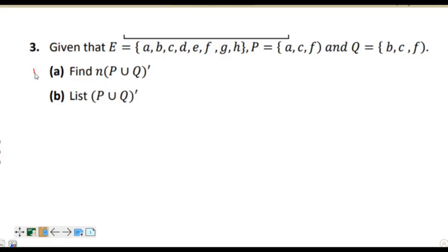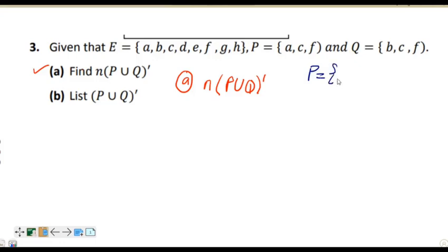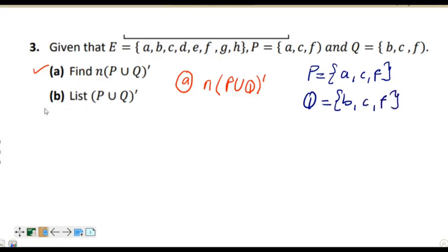We go to question A: find the number of elements in (P union Q) complement. So first, we are going to answer question A, where we need to find the number of elements in (P union Q) complement. We have set P with elements A, C, and F, and set Q with elements B, C, and F. Since we have P union Q in brackets and then complement, we will first find P union Q without the complement.